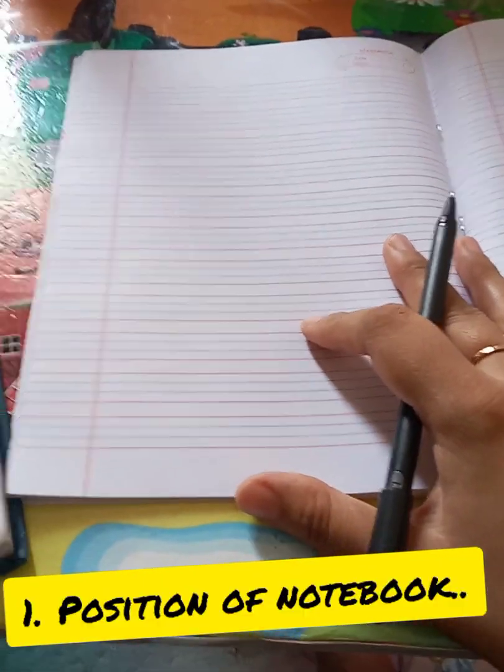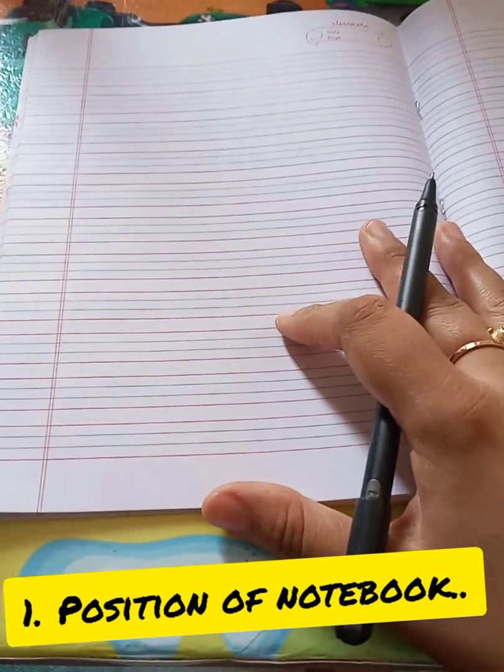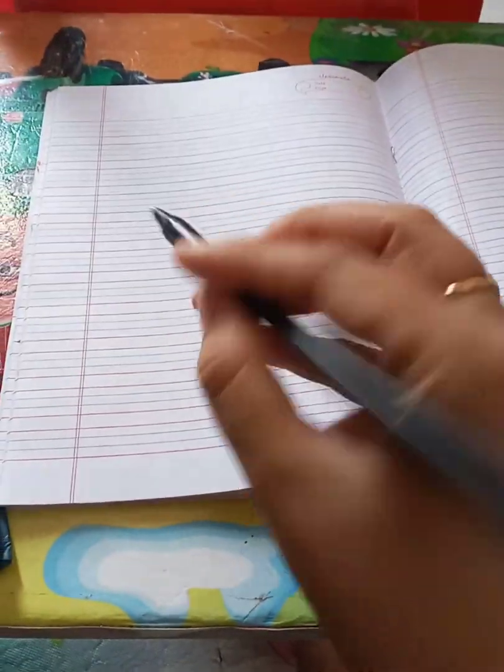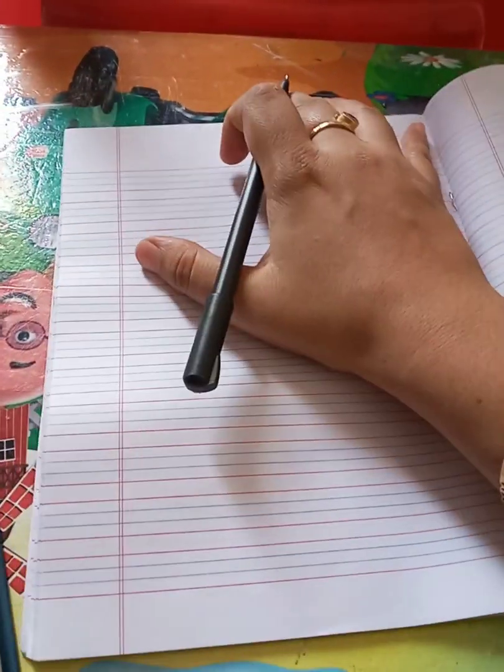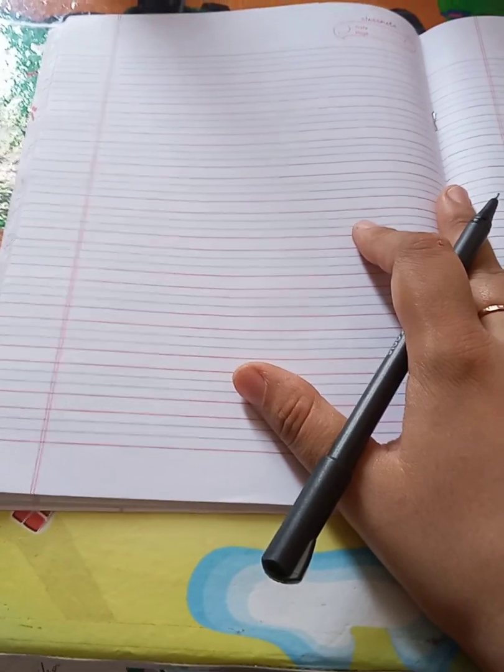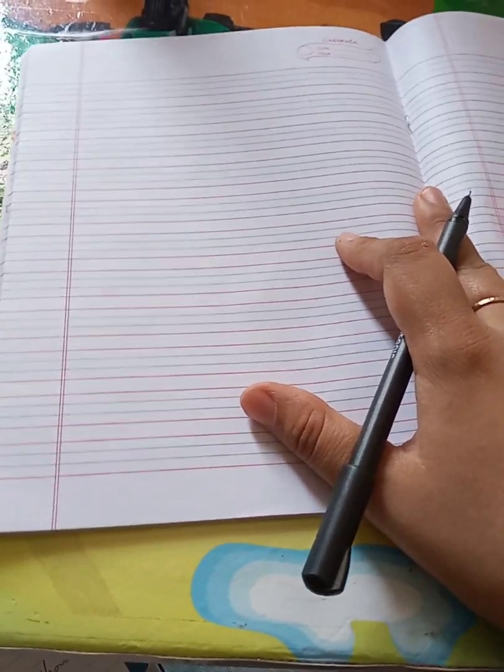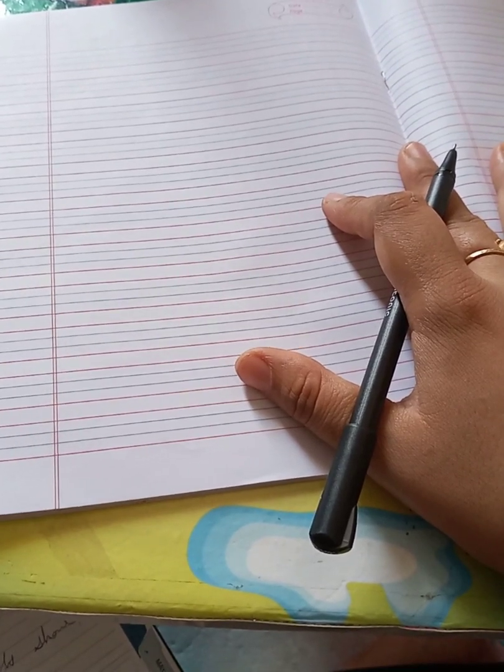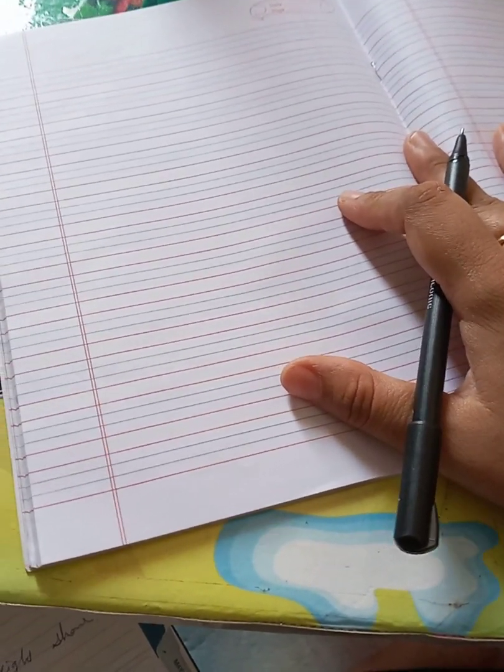Okay, let's get started. Number one is position of book. If you are a right-hander, you are writing with a right hand, make sure your notebook is tilted slightly left toward the left while writing. Like this.